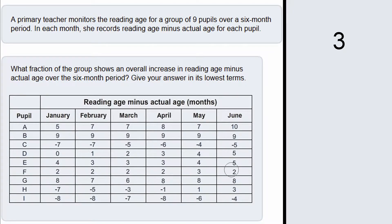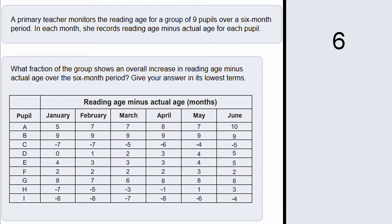E has gone from 4 to 5, which is again an improvement. F has stayed the same, G has stayed the same. H has gone from negative 7 to 3, which is a big improvement, and I has gone from negative 8 to negative 4, which is also an improvement.